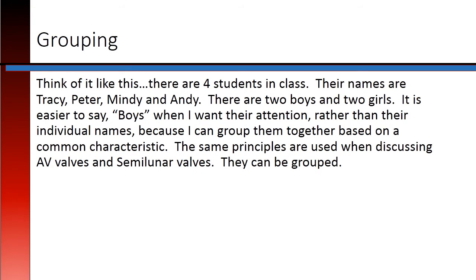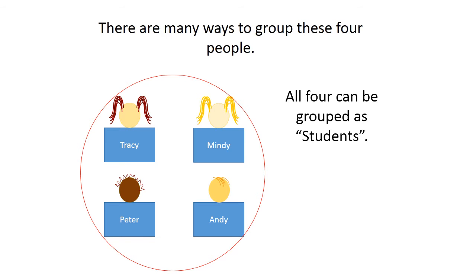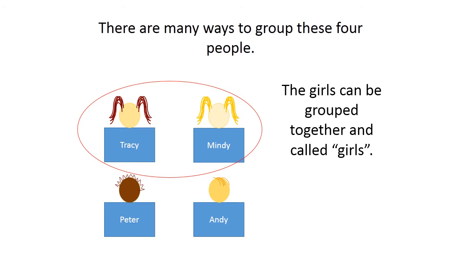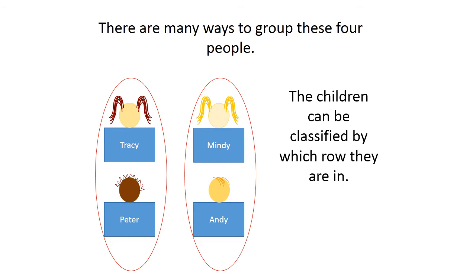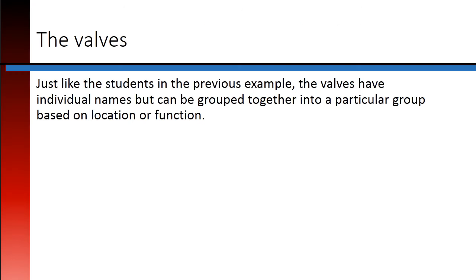Think of it like this: there are four students in class named Tracy, Peter, Mindy, and Andy — two boys and two girls. It is easier to say 'boys' when you want their attention rather than their individual names, because you can group them together based on a common characteristic. The same principle applies when discussing AV valves and semilunar valves — they can be grouped. Just like the students, the valves have individual names but can be grouped together based on location or function.